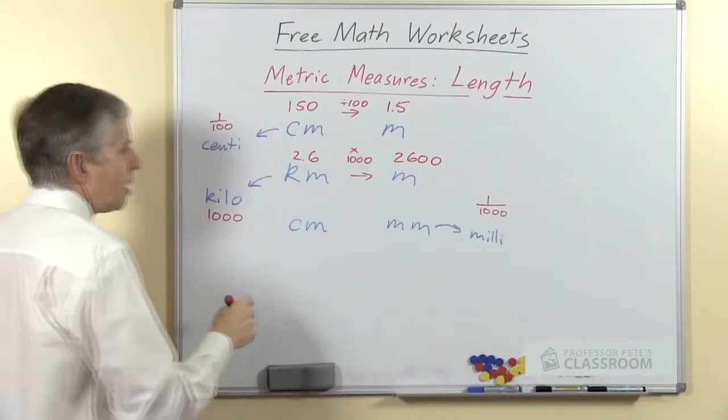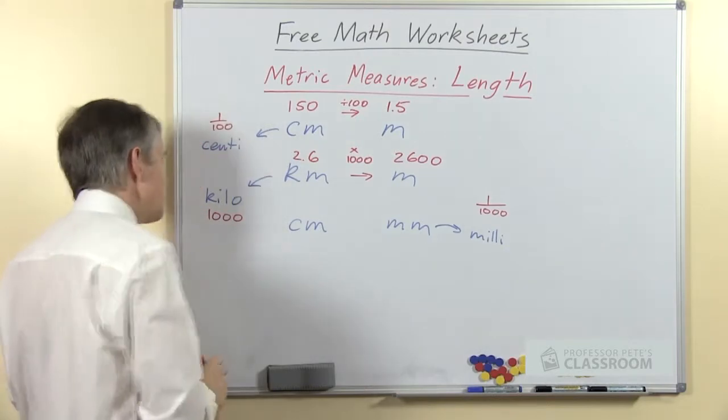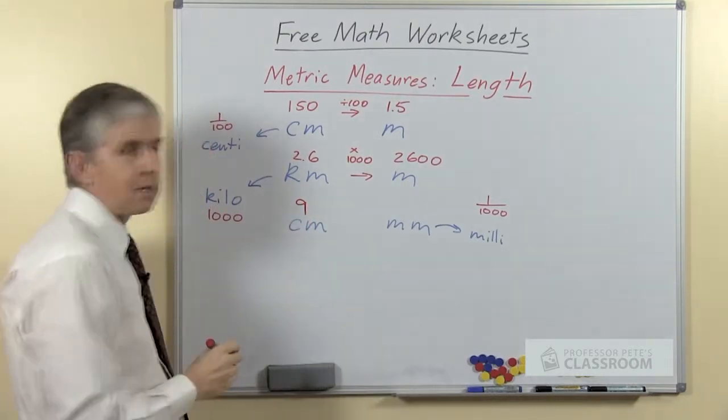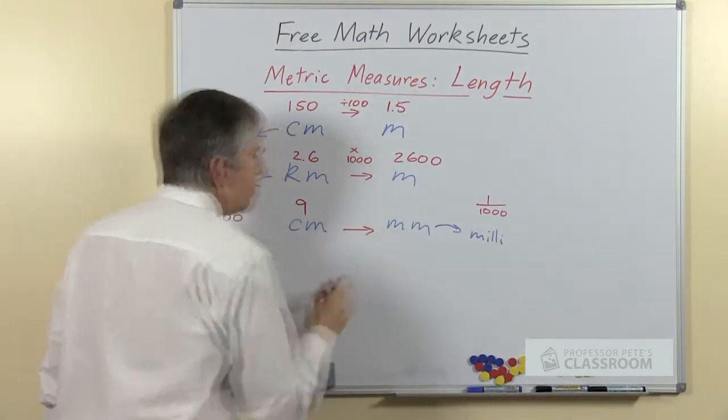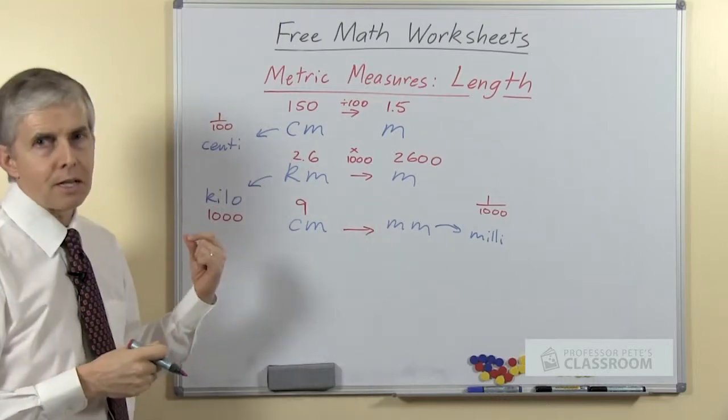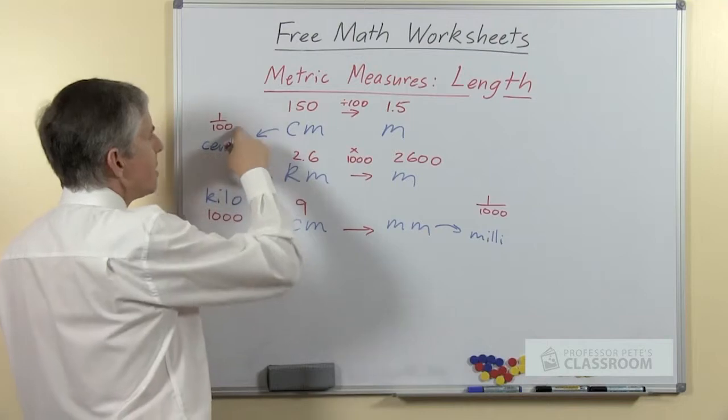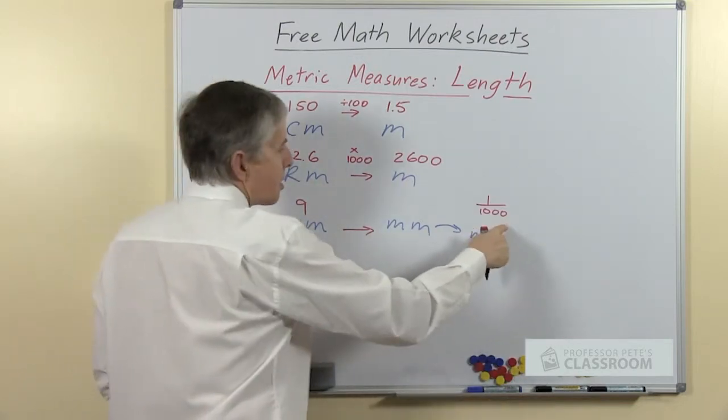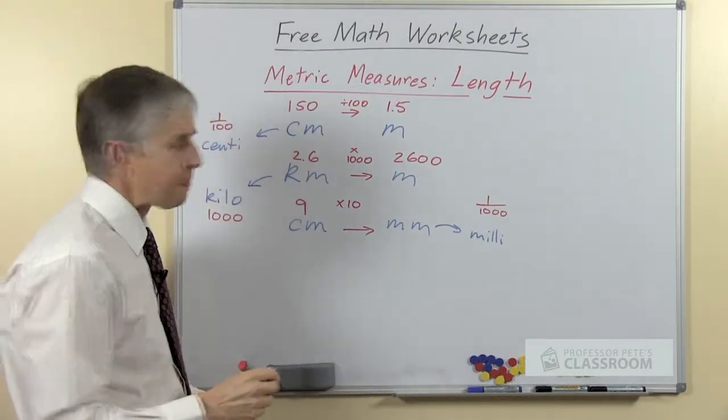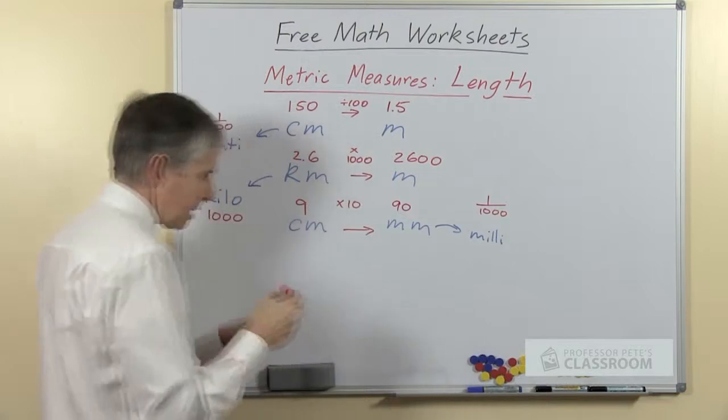For the last example, let's have a nice easy one: 9 centimeters to millimeters. The prefix itself doesn't tell us, we have to look at the difference between the prefixes. If this is a hundredth and this is a thousandth, the difference is 10, so we multiply centimeters by 10 to give us millimeters, and that's 90.